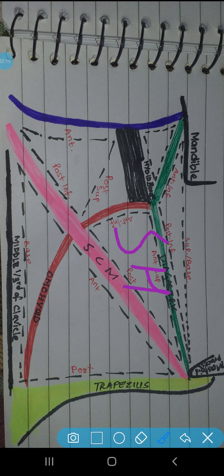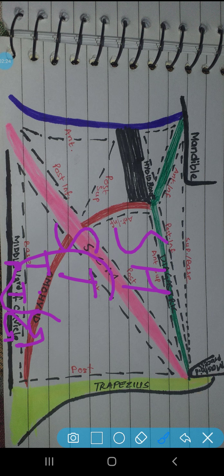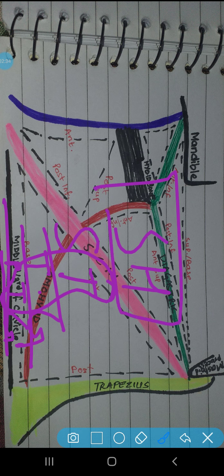The contents of the muscular triangle are: sternohyoid muscle, sternothyroid muscle, thyroid gland, and parathyroid gland. So three things are related to the thyroid: sternothyroid muscle, thyroid gland, and parathyroid gland. Plus the sternohyoid muscle.